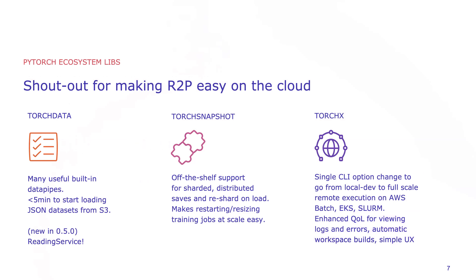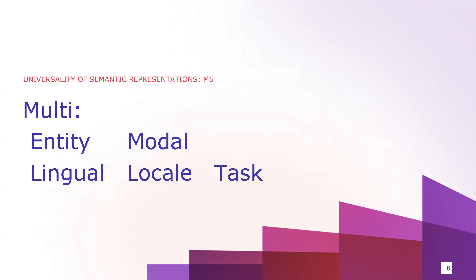Because we split the universalities across five different categories, the specific project itself is called M5. I'm going to be referring to M5 quite a bit through the rest of this talk.